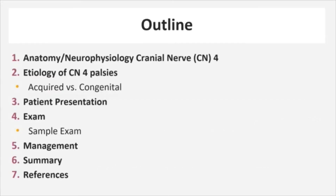Briefly in this talk we'll cover the anatomy and neurophysiology of cranial nerve 4, the etiologies of cranial nerve 4 palsies and how an affected patient would present. We'll compare and contrast congenital and acquired palsies where appropriate. Next we'll discuss how to examine these patients using a particular test to identify the paretic muscle. We'll perform a sample exam together and we'll finish by discussing cranial nerve 4 palsy patient management.